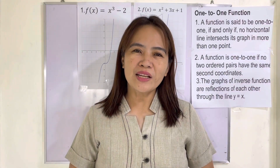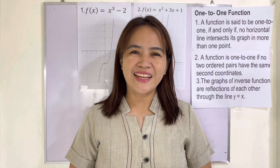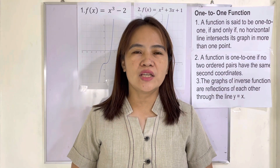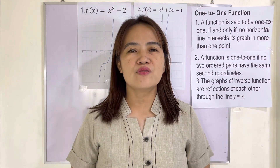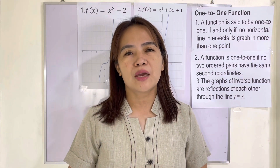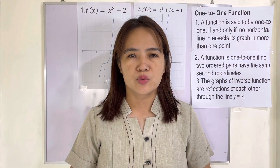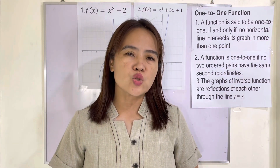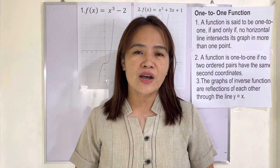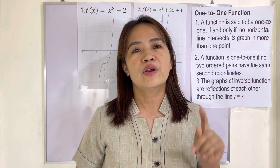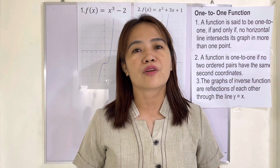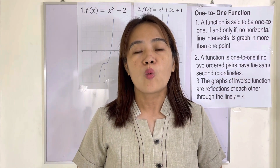Hello everyone, welcome back to my channel. Our most essential learning competency in this session is to represent the inverse of a one-to-one function through its graph and table of values. Let us define first what a one-to-one function is. A one-to-one function is a function in which for every value of x there corresponds a unique value of y.